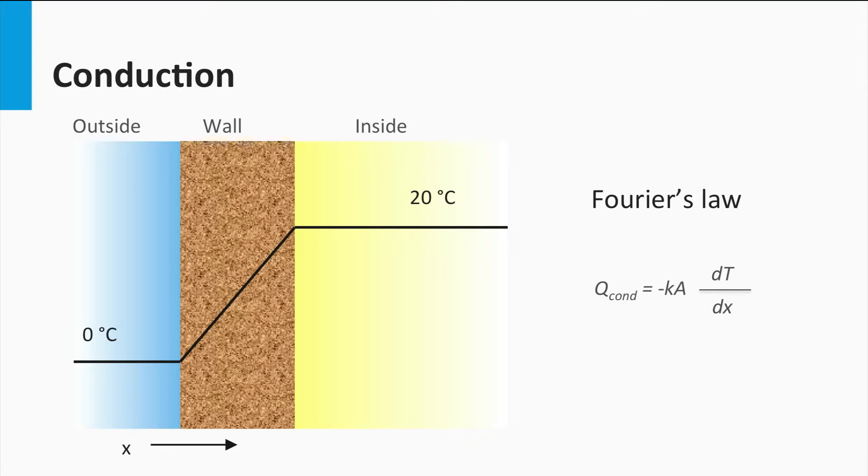Conduction is described by Fourier's law in which Q is the heat flux in watts, K is the thermal conductivity of the particular material in watts per degree Kelvin per meter, A is the contact area in square meters, and dT/dx is the temperature gradient in x direction in degree Kelvin per meter.